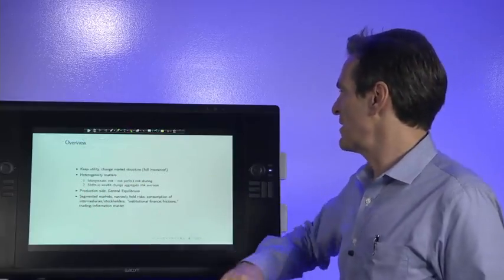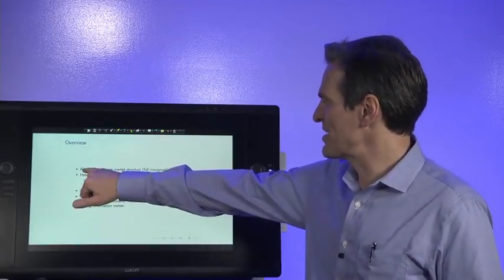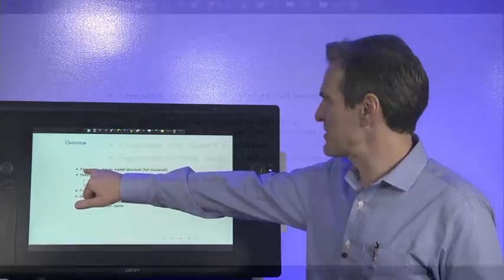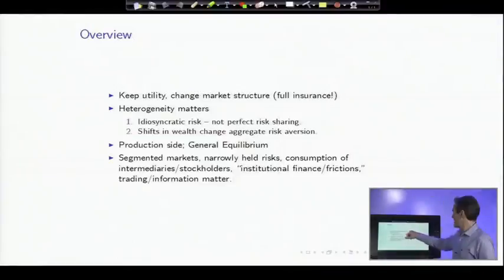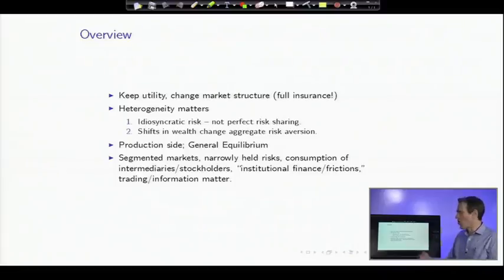Other changes, rather than just change the utility function, we saw two examples of keeping the utility function but changing the market structure. So in one case, with the assumption of full insurance. And if you look at the assumptions of our model, rationality of the investor may not be the most obvious thing that's wrong, but the assumption that all risks are fully insured and consumption moves in lockstep. Well, maybe that's the one that's wrong.